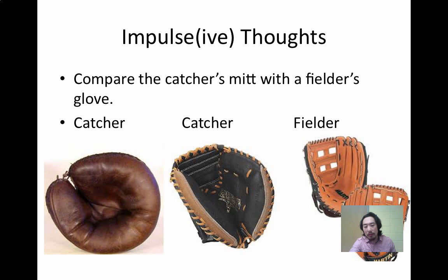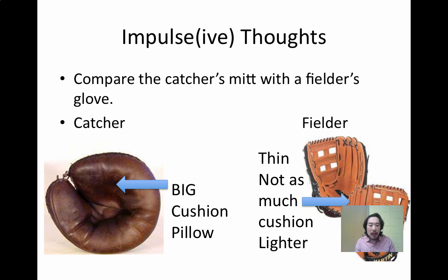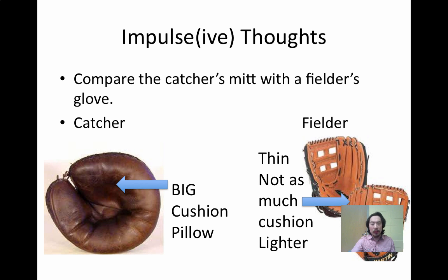Take a look at this picture, and then take a look at this picture. The fielder is out there in the field catching the balls hit by the batter, and the catcher is catching the balls thrown by the pitcher. There is a big difference. The catcher's mitt is big and cushiony — it looks like a pillow — whereas the fielder's mitt is thin compared to the catcher's and doesn't have nearly as much cushion. You have to think form and function: why is that?